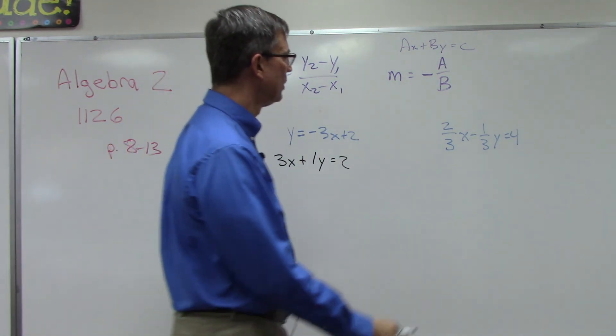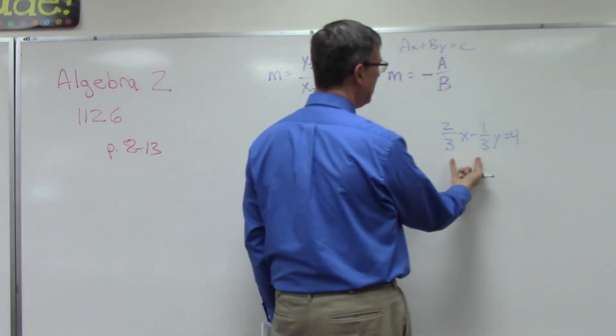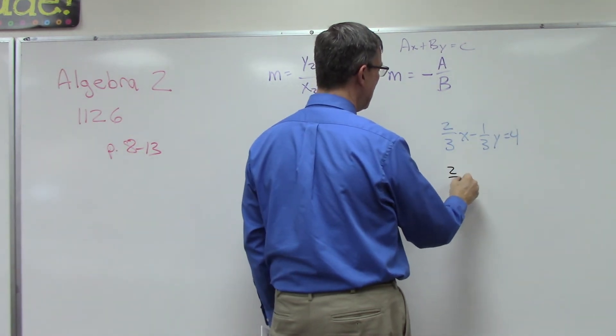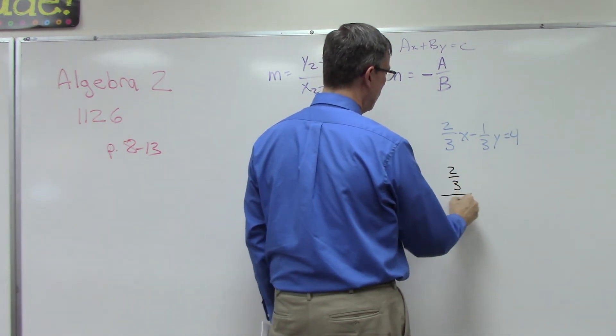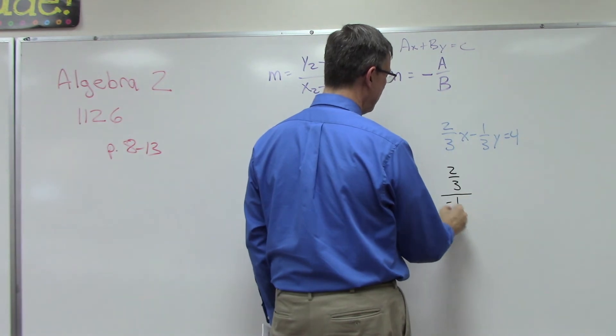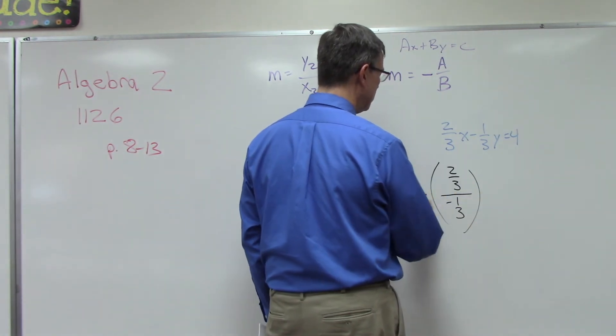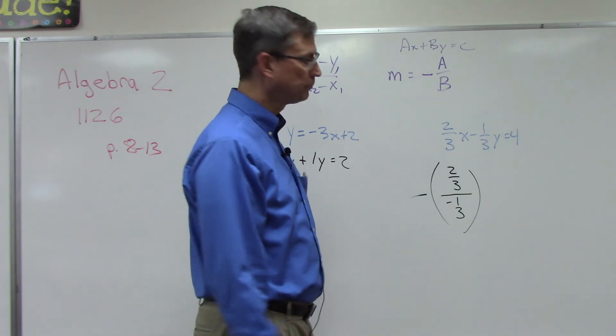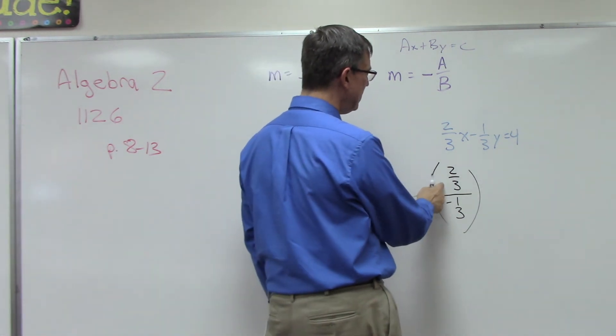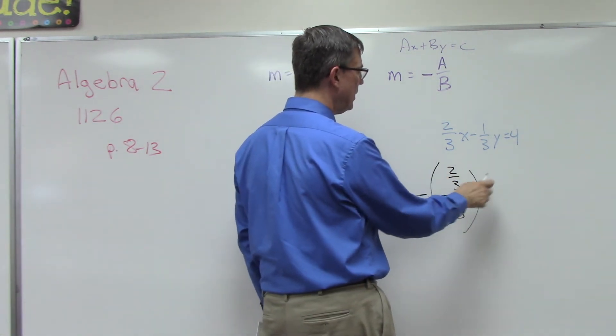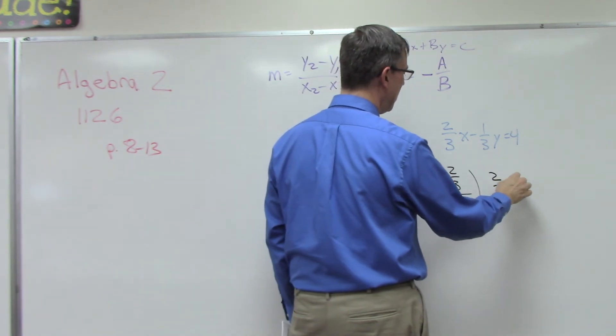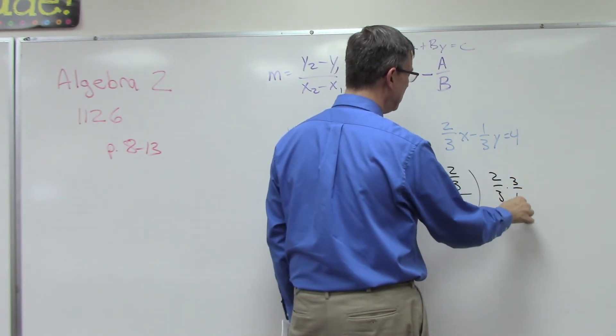This one looks tricky. This isn't too bad. We have two fractions, so we'll take the a value over the y value, and we're going to do the opposite of that. Well, this means I'm going to take the top one and multiply by the reciprocal. Remember that, when we divide by a fraction, you multiply by the reciprocal.